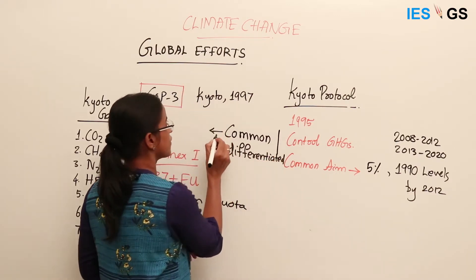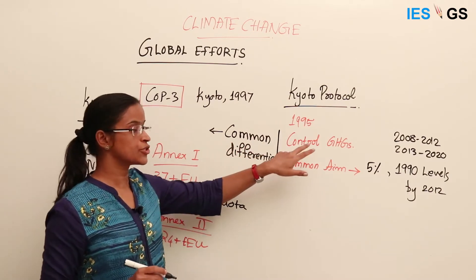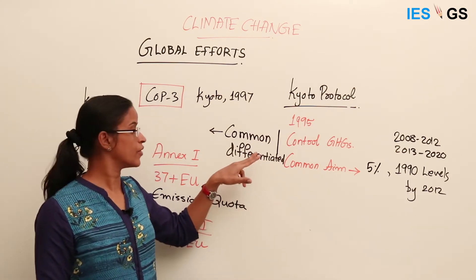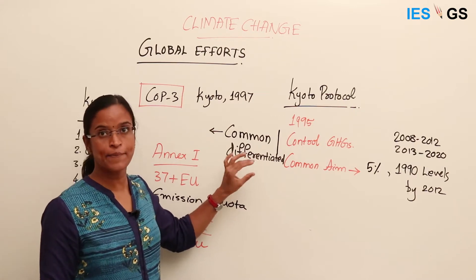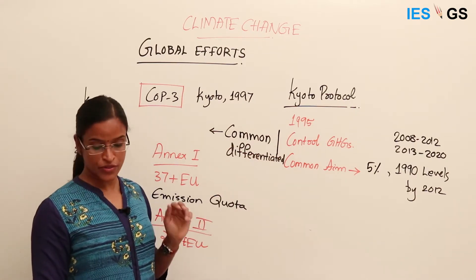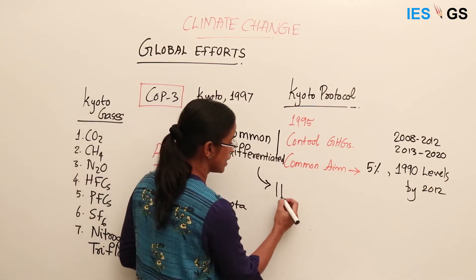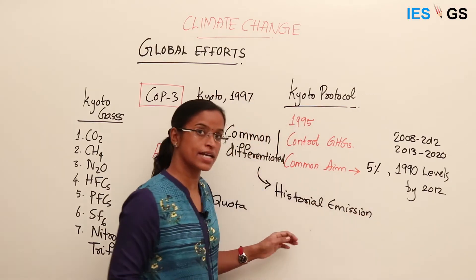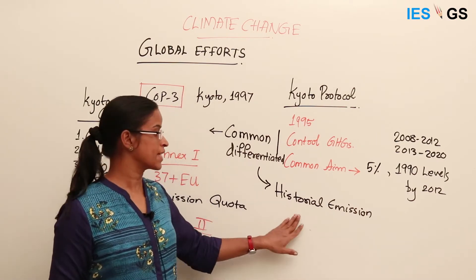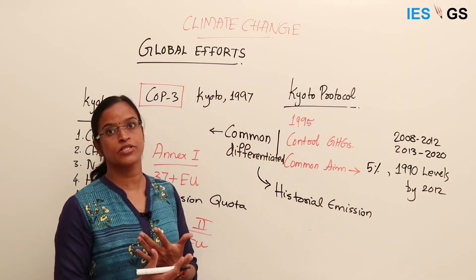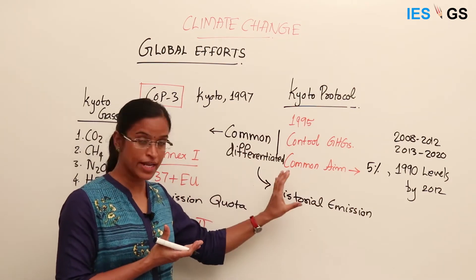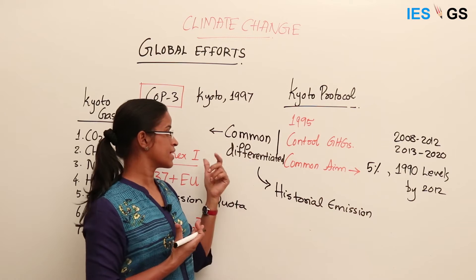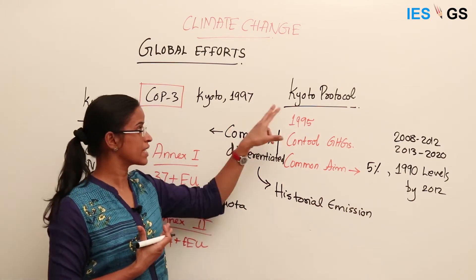Common means every country in the world has responsibility to control greenhouse gas emissions, but the responsibility is differentiated because all countries are not advised to take up the same effort. This is because of historical emissions — these historical emissions were made by industrialized countries during the era of industrialization, mainly European countries and America, and they are responsible for the major greenhouse gas emissions that have already happened. So those countries are supposed to take up more efforts than others. That is the differentiation principle in the Kyoto Protocol.